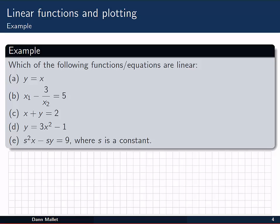So let's look at this example. Which of the following functions or equations are linear? Remember we're looking for sums or differences of constants and constant multiples of variables. And that's exactly what we've got in A. We've got one lot of y equal to one lot of x. Just constant multiples of the variables. So that one is linear.